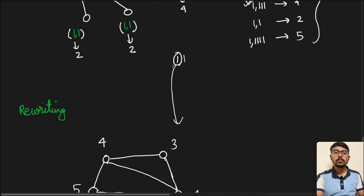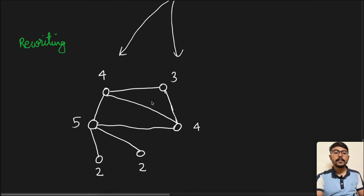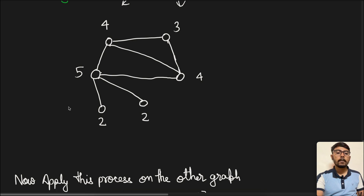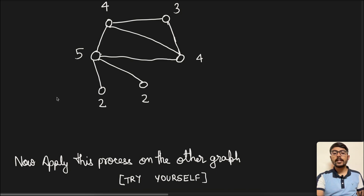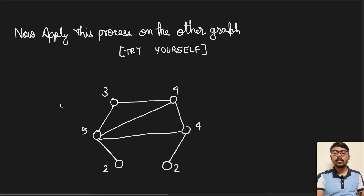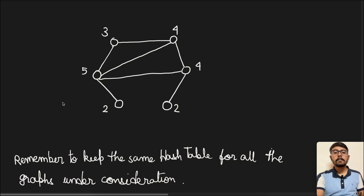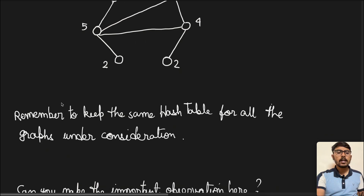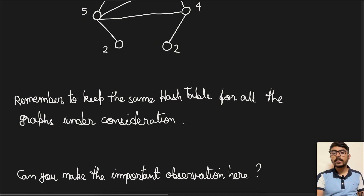Now we apply this same process to graph two from the question. I encourage you to pause the video, find the color-refined labels for that graph yourself, then restart here to check your answers. Remember that the same hash table must be used for both graphs within a single iteration — for all graphs under consideration we will have the same hash table.